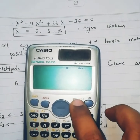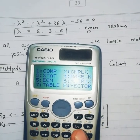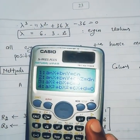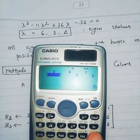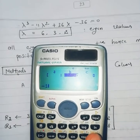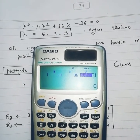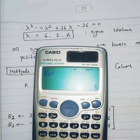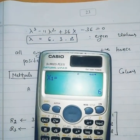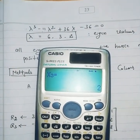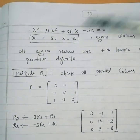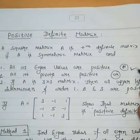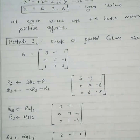To solve on a calculator, go to Mode, then Equation (option 5), then select cubic equation (option 4). Enter the coefficients: a = 1, b = minus 11, c = 36, d = minus 36, pressing equals after each. You will get x1 = 6 (first eigenvalue), x2 = 3 (second eigenvalue), x3 = 2 (third eigenvalue). So eigenvalues are 6, 3, and 2 — all positive. Hence the matrix is positive definite. The first condition is satisfied, and in the exam this method alone earns full marks.